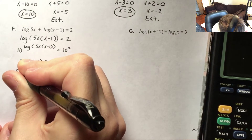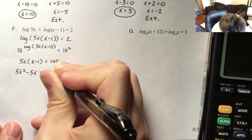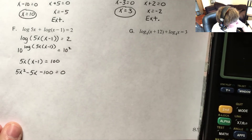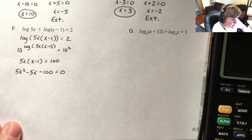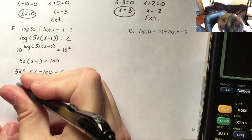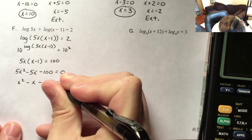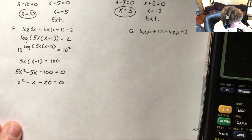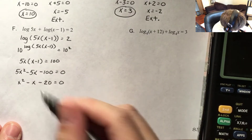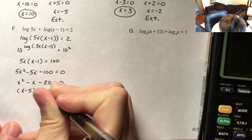I distribute 5x to get 5x squared minus 5x, and I'll subtract 100 already. I need to factor, so I start with the greatest common factor — clearly 5 can be divided out of every part, giving me x squared minus x minus 20. That's a trinomial with an a value of 1, so I'm looking for numbers that multiply to negative 20 and add to negative 1, which is negative 5 and positive 4.